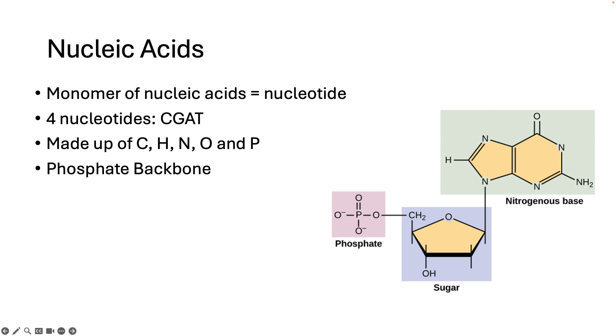You can see in the picture here, a nucleotide is made up of a phosphate group, a sugar, and a nitrogenous base. DNA and RNA differ in the sugar that they use. One is deoxyribose and one is ribose.